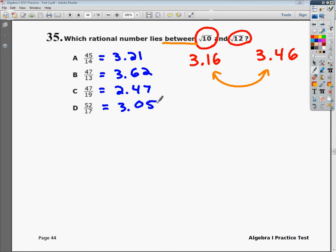And you're trying to find out which one of these numbers is in between $3.16 and $3.46. Well, this is greater, this is less than, this is also less than, so your answer is going to be choice A.